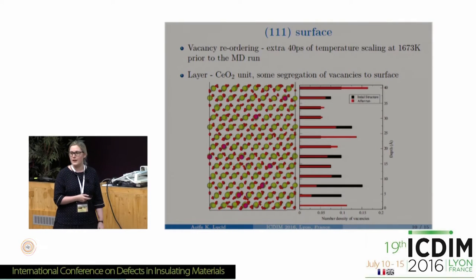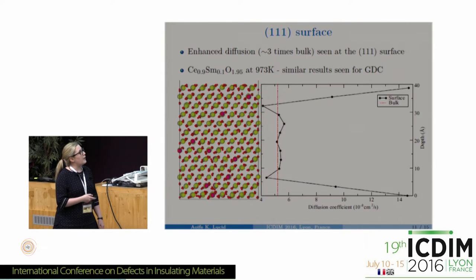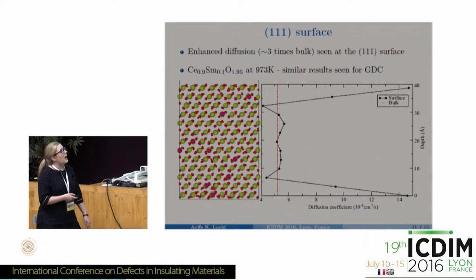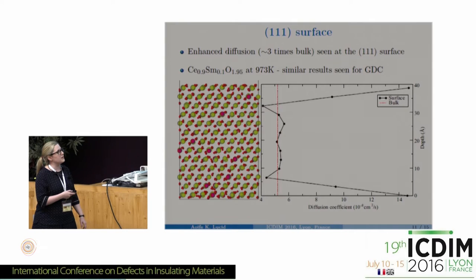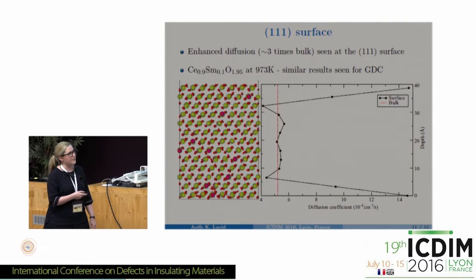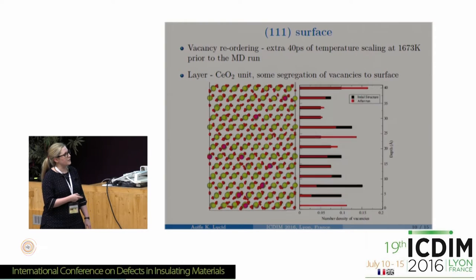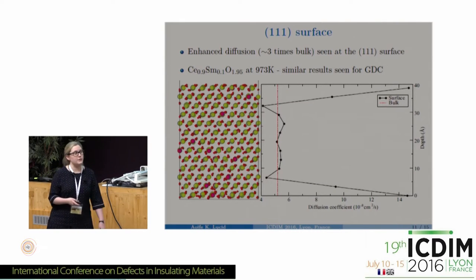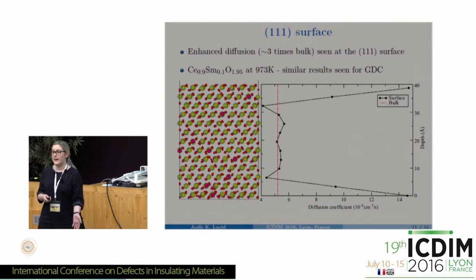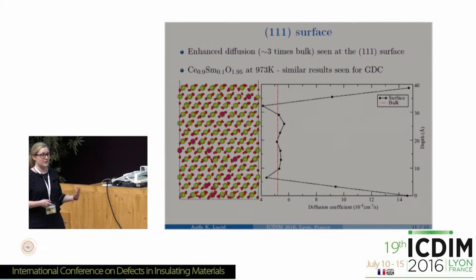There were no vacancies in the bottom layer of the surface initially. Each layer is counted as a CeO₂ unit. Looking at planar diffusion along the 1-1-1 surface — corresponding to 4D from the MSD — a plot of diffusion coefficient versus depth clearly shows very high diffusion along the surfaces where vacancy segregation occurred. Subsurface layers with far fewer vacancies show a depletion of oxygen diffusion. Very similar results were observed for gadolinium doped ceria, so separate GDC results are not presented.